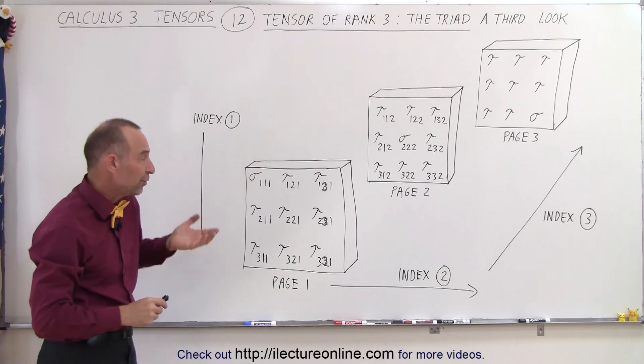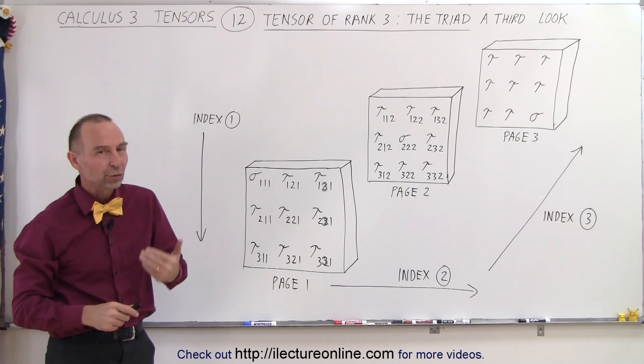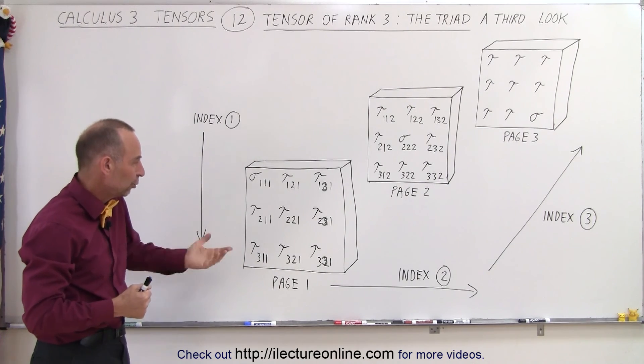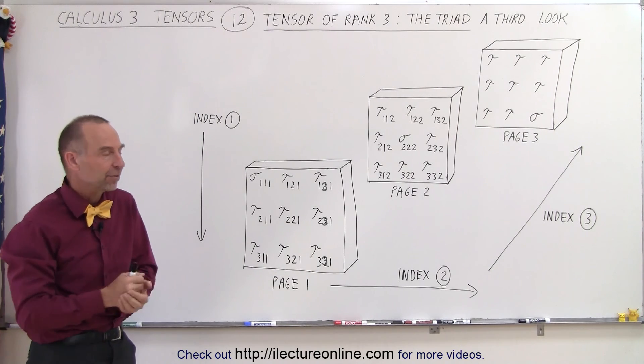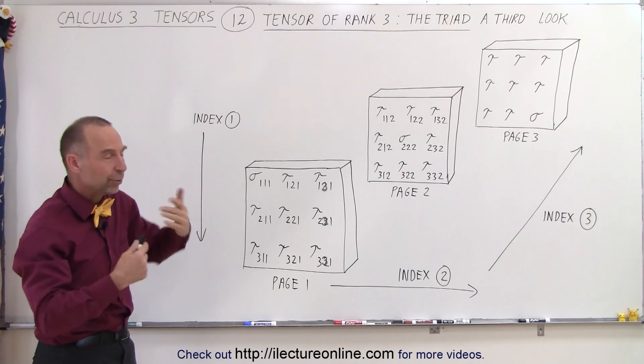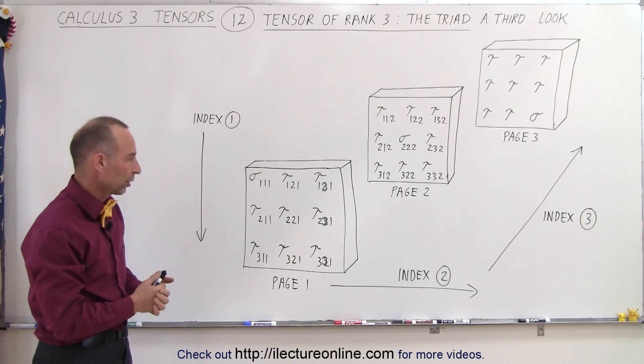Notice a change here. Instead of using xyz, I've used one, two, three. Again, that represents the exact same thing - one represents x, two represents y, and three represents z. Also notice I did not fill out the third slice so we can do it together to see how that works.